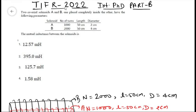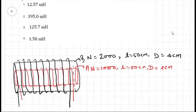This question was asked in TFR 2022 physics paper, Integrated PhD Part 5. It says that two coaxial solenoids A and B whose configurations are given in this table, and we need to find the mutual inductance between the solenoids. So the picture is something like this.